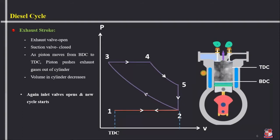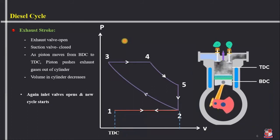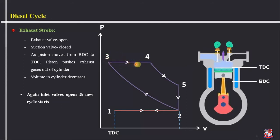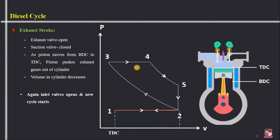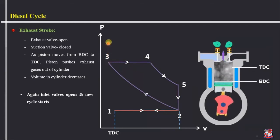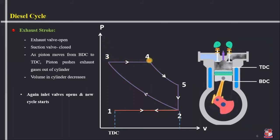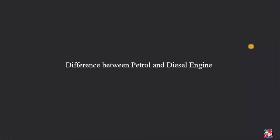This is how a four-stroke diesel engine works. In this cycle, heat is supplied at constant pressure in process 3 to 4. That is why this cycle is also known as the constant pressure cycle. In a petrol engine, fuel is supplied at constant volume, making it a constant volume cycle. In the diesel cycle, heat is supplied at constant pressure, so it is the constant pressure cycle.